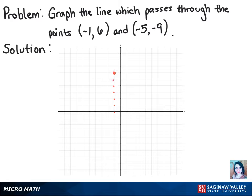For our second point, we'll move to the left 5 units on the x-axis and down 9 units. That gives us our second point. Then we just connect these two points and we have our line.